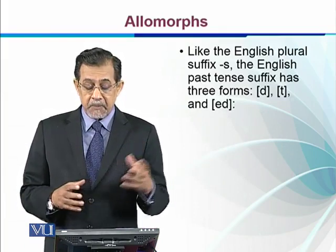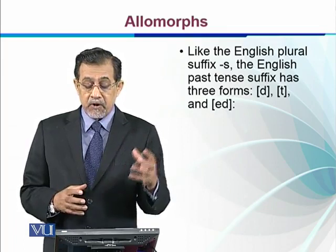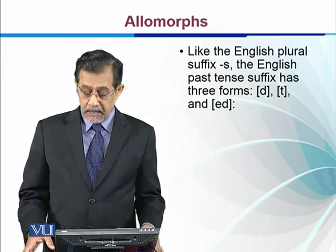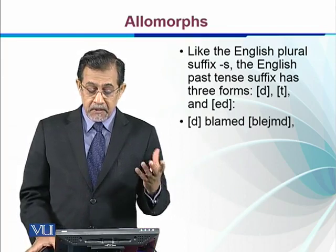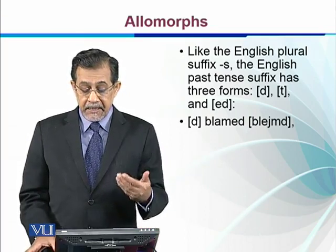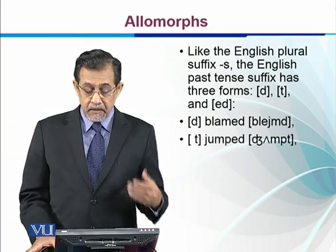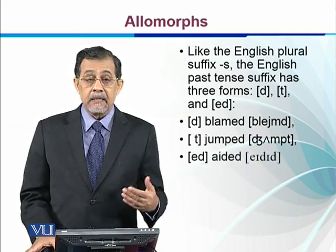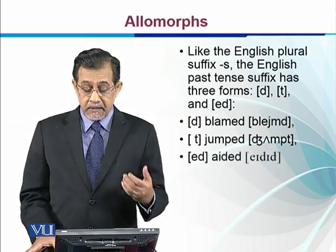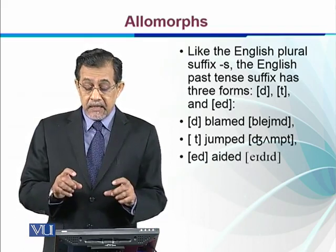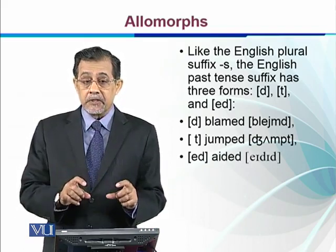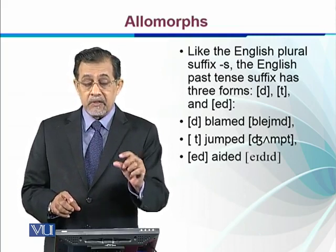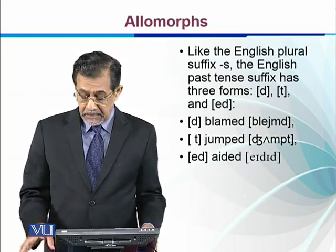The English past tense suffix has three allomorphs: /t/, /d/, and /ɪd/ (or ED). For example, we have /d/ in 'blamed', /t/ in 'jumped', and /ɪd/ in words like 'started'. We know they have a certain logical distribution — we know when to bring /d/, /t/, and /ɪd/.